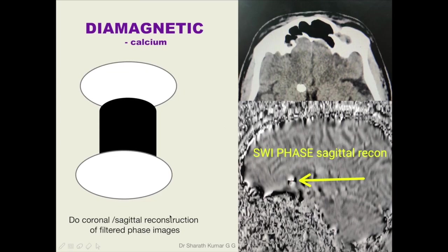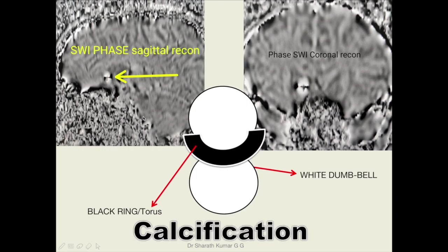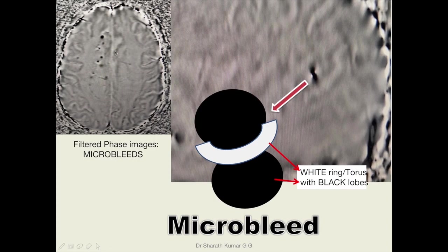The point to always remember is that we should do coronal and sagittal reconstruction of filtered phase images. This part is called the torus and this part is called the dumbbell. On the filtered phase sagittal reconstruction image, corresponding to the area of calcification on CT, the torus shows dark signal and the dumbbell shows bright signal — which is characteristic of diamagnetic substances like calcium. A black torus and white dumbbell indicates calcification, whereas a white torus and black dumbbell represents a microbleed.